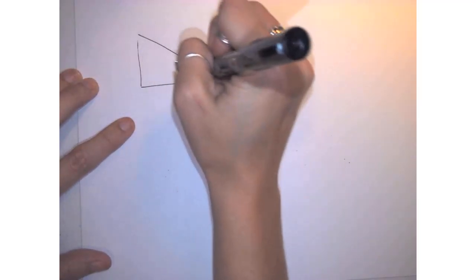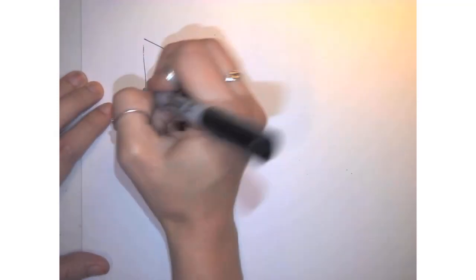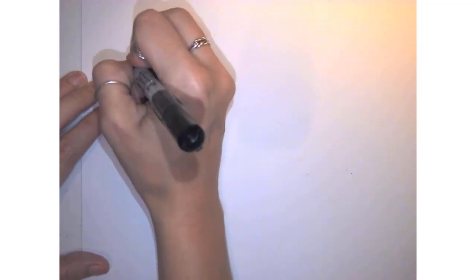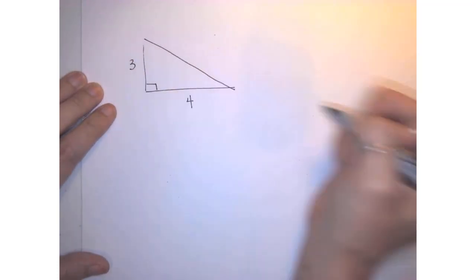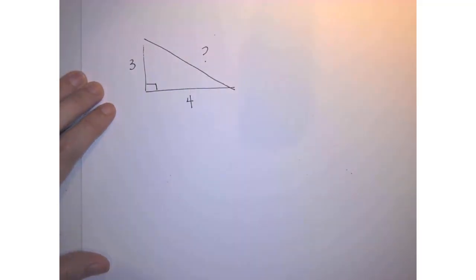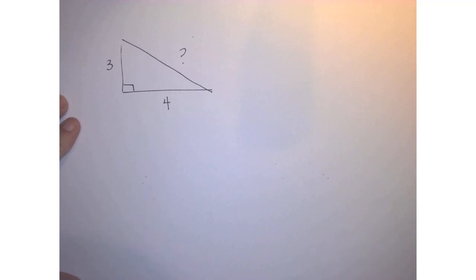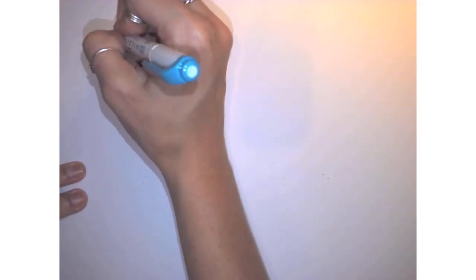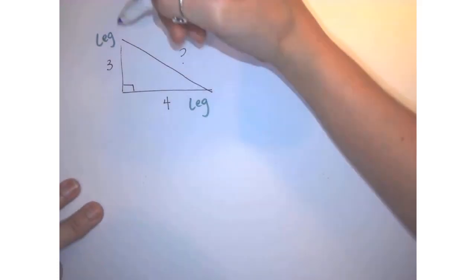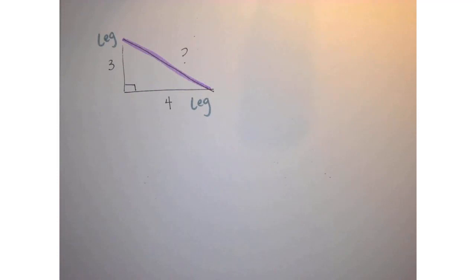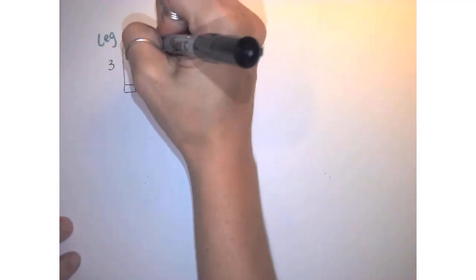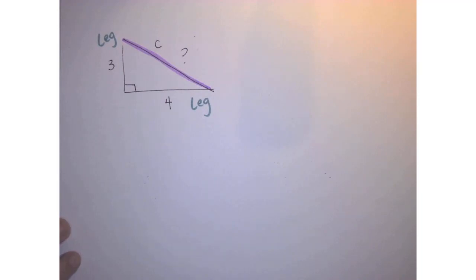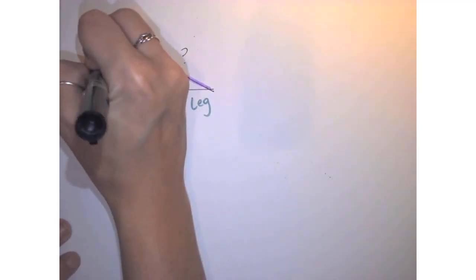Let's say we have a right triangle that has a 90-degree angle. We know that this side length is 3, this side length is 4, and we're not sure what the hypotenuse is. We need to ask ourselves what part of the triangle is missing. We know one leg, we know the other leg, and we need to figure out the hypotenuse. Remember, the hypotenuse is always referred to with the letter C. For the legs, it doesn't really matter — they're interchangeable. It doesn't matter which one we say is A or B, so I'm going to say this one is B and this one is A.